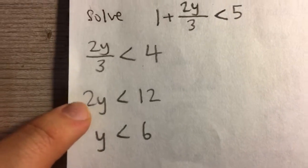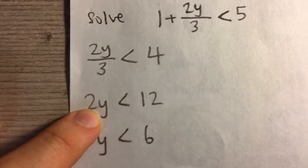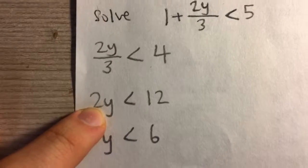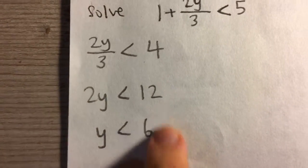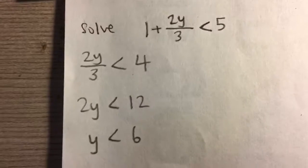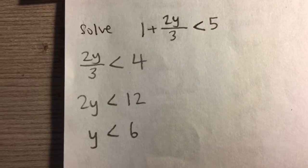Finally, I'm trying to isolate y, so let's divide both sides by 2. On the right side, I'm going to get 6. My final answer is y is less than 6.